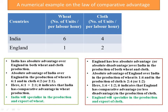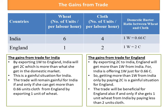So according to the law of comparative advantage, India will specialize in the production and export of wheat, and England will specialize in the production and export of cloth. If trade between India and England occurs in this way, both countries will gain from international trade. Now let us see the gains from trade. By exporting one unit of wheat to England, India will get two units of cloth, which is more than what she gets in the domestic market — where India would have received only 0.66 units of cloth for one unit of wheat. So getting two units of cloth from England is a gainful situation for India.